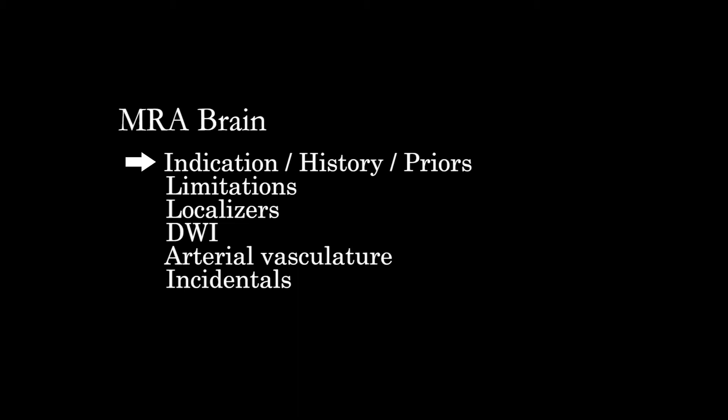You want to get a sense of what type of exam is being done, because that's going to impact the steps we undertake. At different institutions, you'll acquire different sequences. At our institution, we frequently do DWI sequences and localizers as well. On the time-of-flight MRA images, you'll see anatomy that is not just the vessel, so it's important to remember you can pick up incidentals and potentially explanatory findings — things in the brain parenchyma or other incidentally imaged tissues, not just the vasculature.